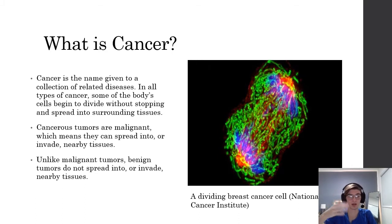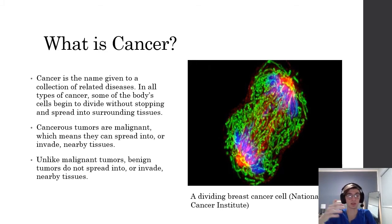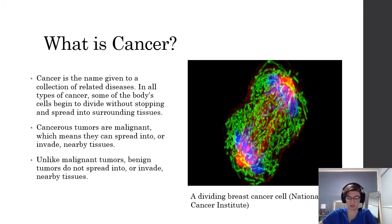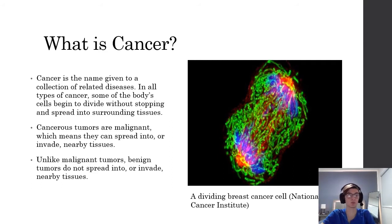When cancer develops, this process divides those cells abnormally. Cells that should die when they're old stay alive, and those cells are called abnormal. With these old cells, new cells start developing around them, and instead of dying, they just stay there, and those extra cells can divide without stopping.